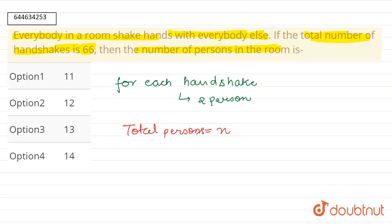So the total number of ways will be the number of ways of selecting two persons out of the n persons, right? So total ways, or we can say total handshakes.